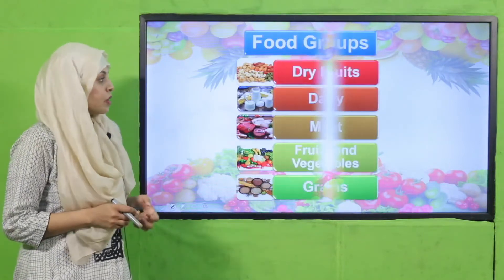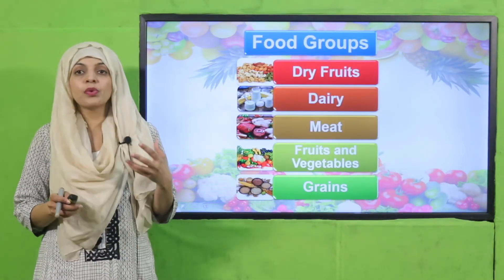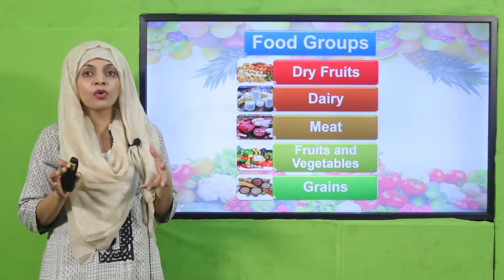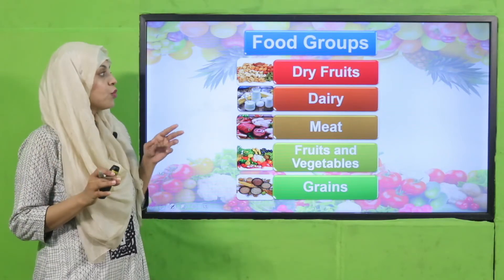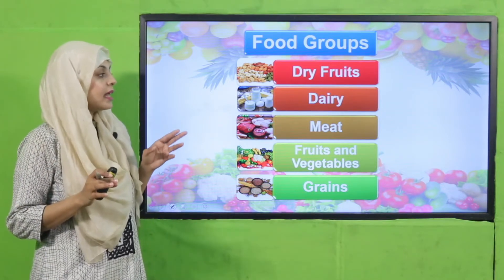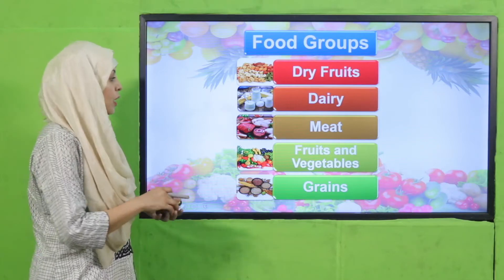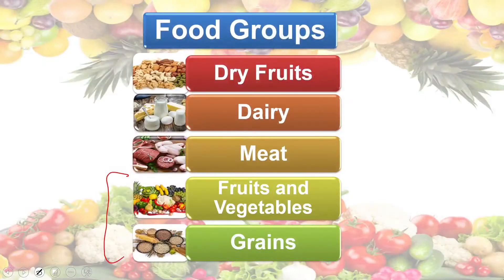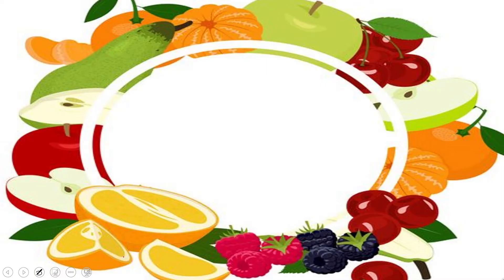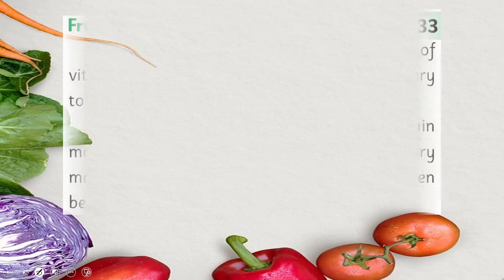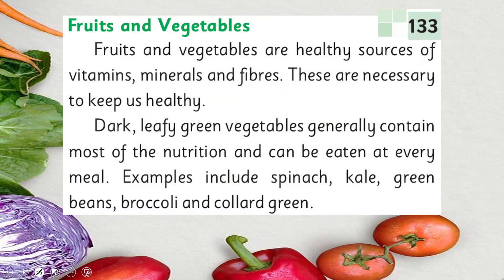There are five primary food groups: dry fruits, dairy, and meat — which we covered in the previous lecture — and today we will discuss fruits, vegetables, and grains. Let's start the reading. Quickly open page number 133 in your GK3 books.